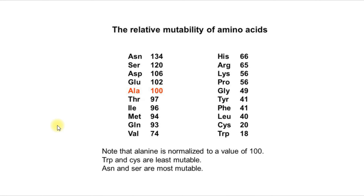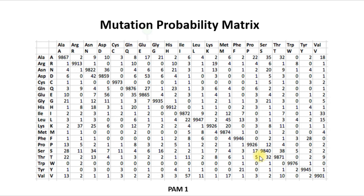In calculating relative mutability from many trees, the information from sequences of different lengths and evolutionary distances is combined. Looking at the relative mutability of amino acids, asparagine and serine have higher relative mutability, meaning they are the most mutable, whereas cysteine and tryptophan are the least mutable. Notably, alanine is normalized to a value of 100.